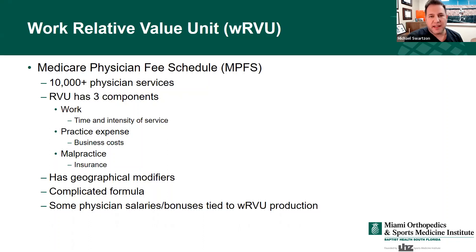A work RVU, or relative value unit, divides how much your work is worth. The Centers for Medicare and Medicaid came up with three components: the actual time and intensity of service including your knowledge and experience; practice expense for keeping the lights on and equipment; and malpractice coverage. Those three components make up an RVU. The WRVU concentrates on your component specifically. If you own your practice, all three are relevant; if you're an employed or academic physician, the work value may be the only one that applies. There are also geographic modifiers, and the formula does change every year.